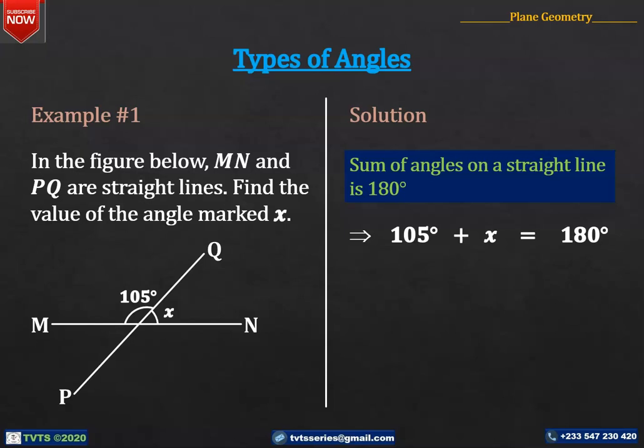We group like terms by subtracting 105 degrees from both sides of the equation. So we have X is equal to 180 degrees minus 105 degrees. 180 degrees minus 105 degrees is 75 degrees. Therefore, X is equal to 75 degrees.